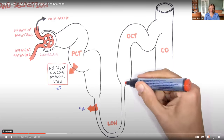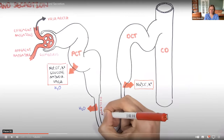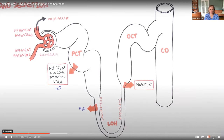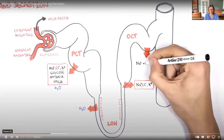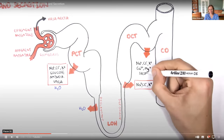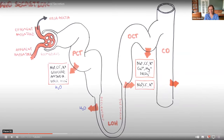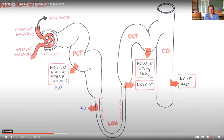[Video resumed] In the ascending limb of the loop of Henle, sodium, chloride, and potassium reabsorption occurs. The distal convoluted tubule is responsible for reabsorption of sodium, chloride, potassium, calcium, magnesium, and bicarbonate. The collecting duct is responsible for reabsorption of sodium, chloride, urea, and water.